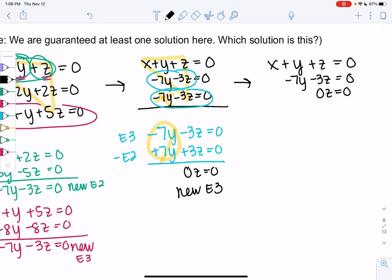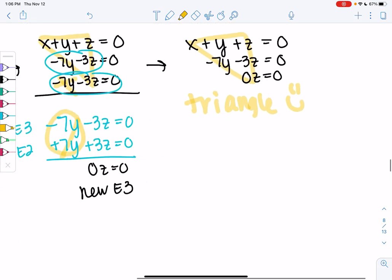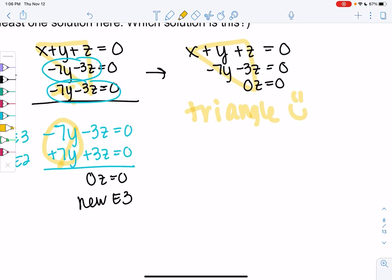Now we have a triangle. 0z equals zero means z can be anything. It means z is arbitrary, and we call it alpha for arbitrary. We can plug in any number and it will work, but y and x will have a relationship with z.